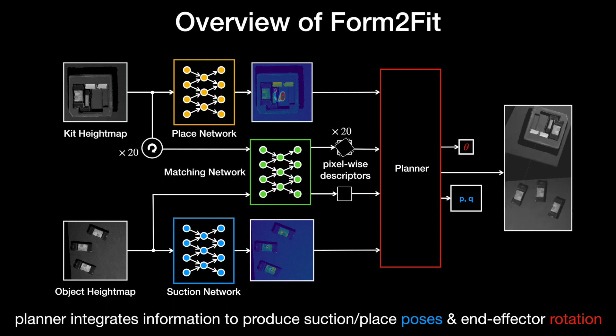Then, for each pick and place pair in the product of candidates, kit and object descriptors are indexed and their L2 distance is evaluated, after which the pair with the lowest L2 distance across all rotations and all candidates is chosen to produce the final kit descriptor, object descriptor, and rotation index.